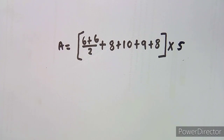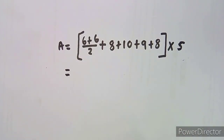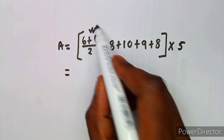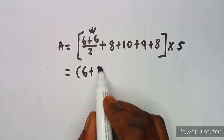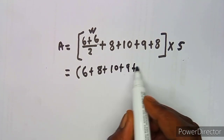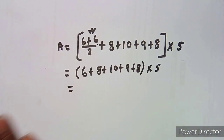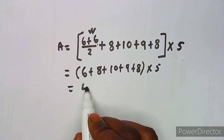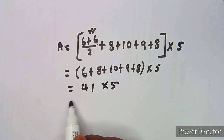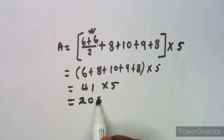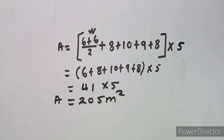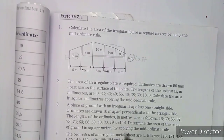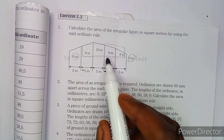If you simplify: 6 plus 6 over 2 gives 6, plus 8 plus 10 plus 9 plus 8, all times 5. Adding everything gives us 41, times 5, which gives us 205 square meters. The units are in square meters because the ordinates were given in meters.